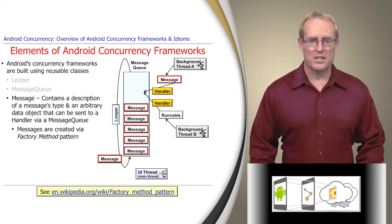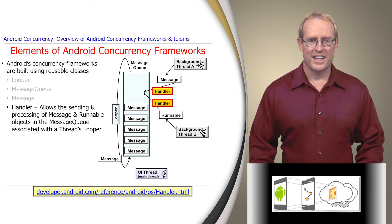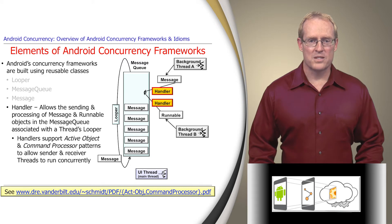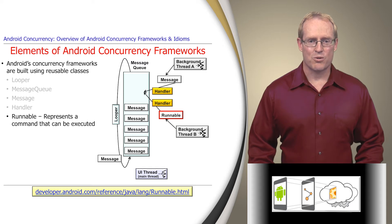Messages aren't added directly to a message queue, but through a handler, which allows the sending and processing of message and runnable objects in the message queue associated with a thread's looper. Handlers provide methods that support both the active object and command processor patterns to allow sender and receiver threads to run concurrently. Implementations of the Java Runnable interface represent commands that can be executed via handlers in conjunction with the looper class.